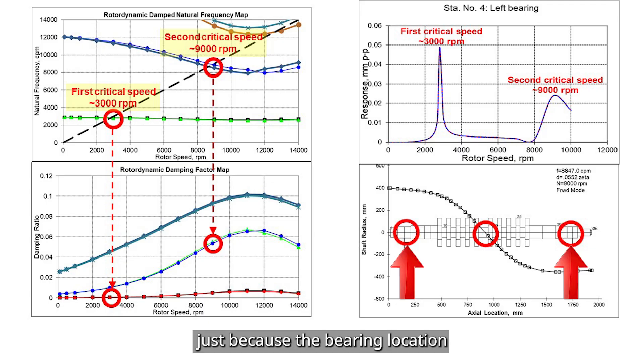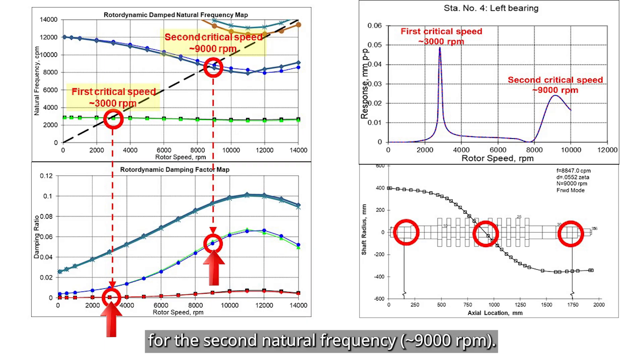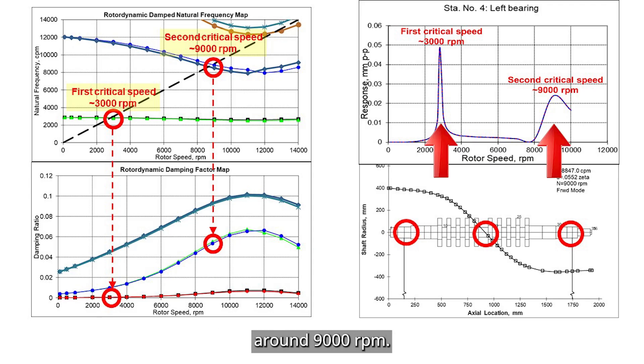So, the bearing location shows more motion at the second critical speed, but does not automatically mean the vibrations will be higher there compared to the first critical speed. To really understand the vibration levels, we need to also look at the damping ratio map. Notice that the damping ratio is actually higher for the second natural frequency. That extra damping reduces the vibration response at the second critical speed, around 9000 rpm. You can see this clearly in the top right figure showing the rotor response analysis.